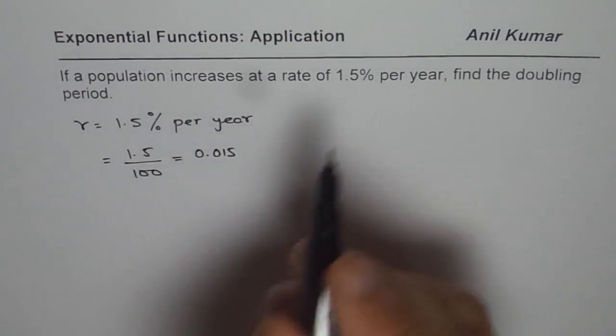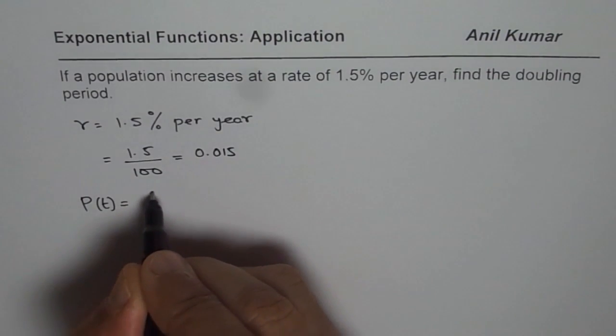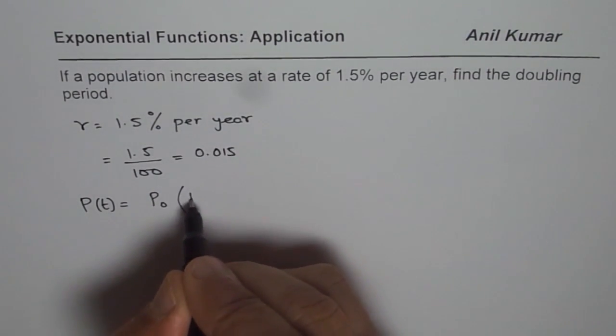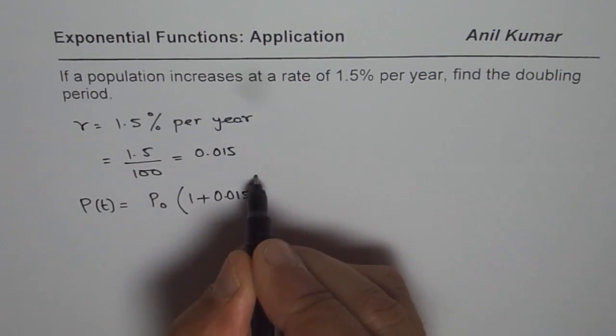Now population is increasing, so we can say population at any instance of time is initial population times 1 plus the growth rate, which is 0.015, to the power of t.